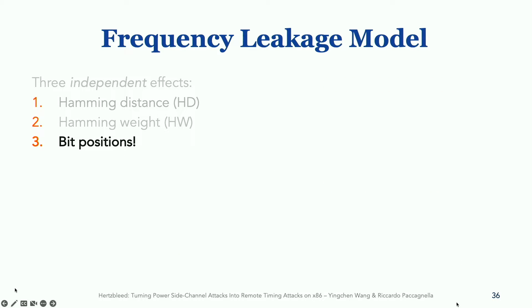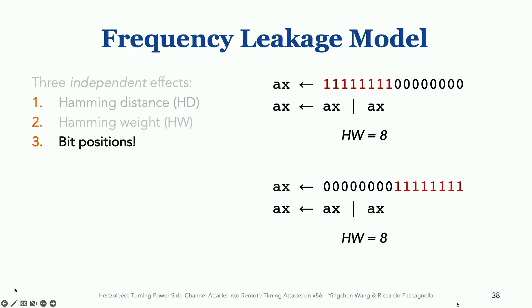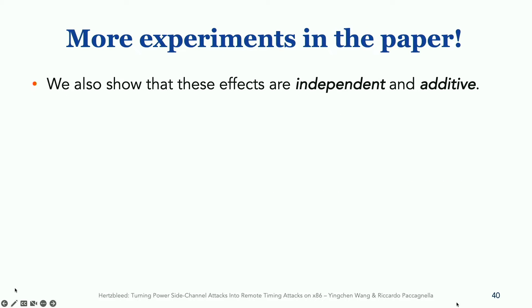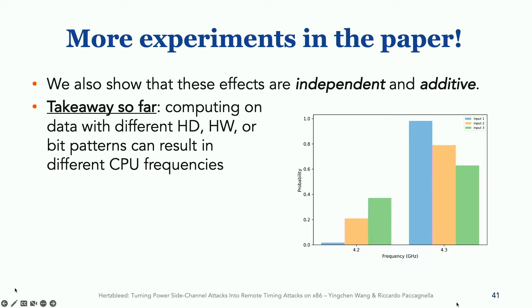But the third and last effect that we discovered is the one of bit positions. This might perhaps be the most surprising. What we found is that even if we run computations that have the same hamming distance and the same hamming weight, such as the ones shown in the slide, the positions of one within the registers also affects power consumption and CPU frequency. So in this specific case, the second computation runs at a higher frequency. And we encourage you to check the paper to figure out more information about this behavior. But really, the important observation here is that going forward, we need to take into account the bit positions as well, not just hamming weights and hamming distances. Now, we have seen these effects now as independent. But in the paper, we also show that these effects are additive. And we are now going to move on to show you how to exploit all these behaviors to mount remote timing attacks on cryptographic implementations.